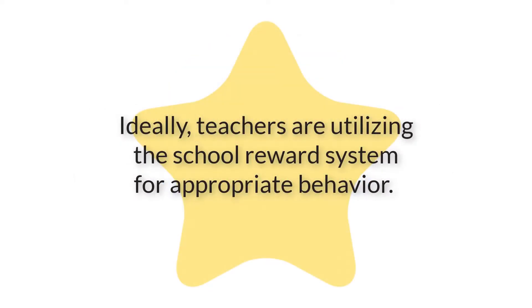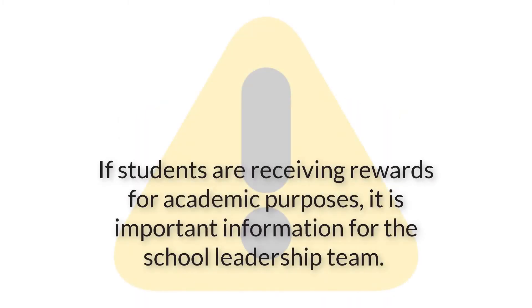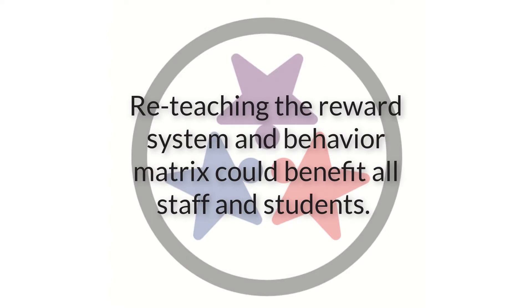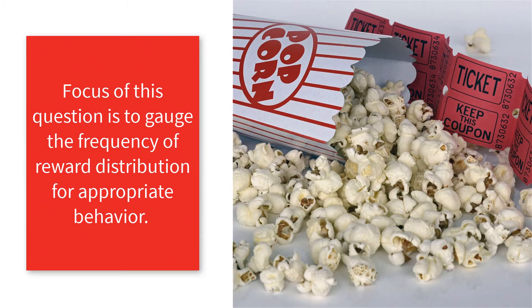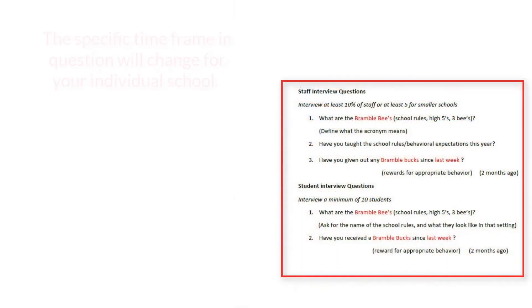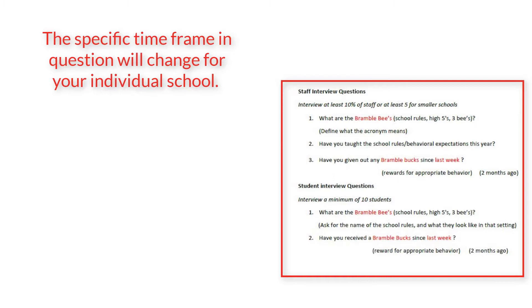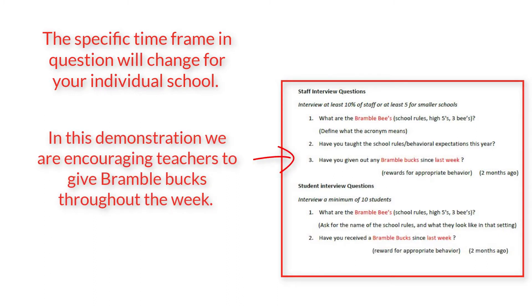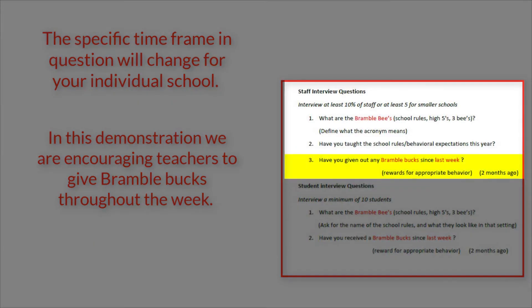This can be useful information to the school leadership team to evaluate the distribution and reasons students are receiving rewards. Ideally, teachers are utilizing the school reward system for appropriate behavior. However, if students are receiving rewards for academic purposes, it is important information for the school leadership team. It could mean that reteaching of the reward system and behavior matrix could benefit all staff and students to ensure everyone is implementing Tier 1 systems with fidelity. The focus of this question is to gauge the frequency of reward distribution for appropriate behavior, so the specific timeframe in the question will change for your individual school. In this demonstration, we are encouraging teachers to give Bramble Bucks throughout the week.